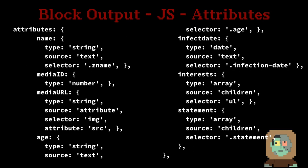The JavaScript code for the block is more involved — this is ES5 to avoid build steps and keep it accessible. One of the main things you'll be defining is an attributes object. In that object: zombie-name (type string), media ID (type number, for uploading an image), media URL (type string, for the image URL), age, infection date, interests, and statement. These represent all the different pieces of our zombie profile.